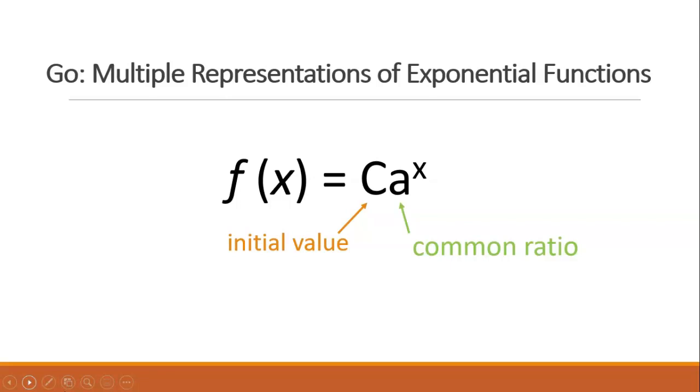If the common ratio a is larger than 1, it is a growth model, and if it is less than 1, it is a decay model. a is always 1 plus or minus the percentage of growth or decay.